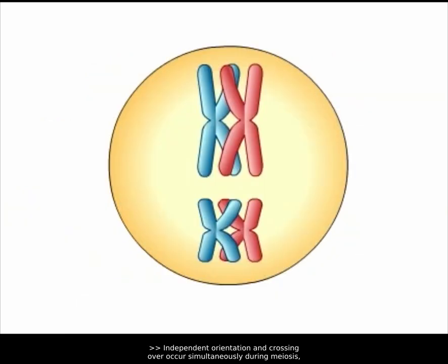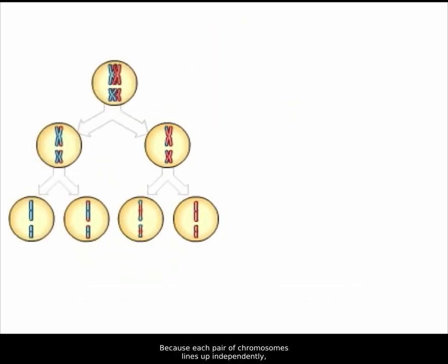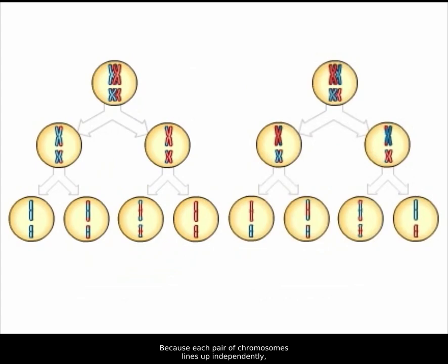Independent orientation and crossing over occur simultaneously during meiosis, multiplying the number of genetic variations among gametes. Because each pair of chromosomes lines up independently, and crossovers can occur almost anywhere along each pair of chromosomes, it is possible for a human being to produce an almost infinite variety of gametes.